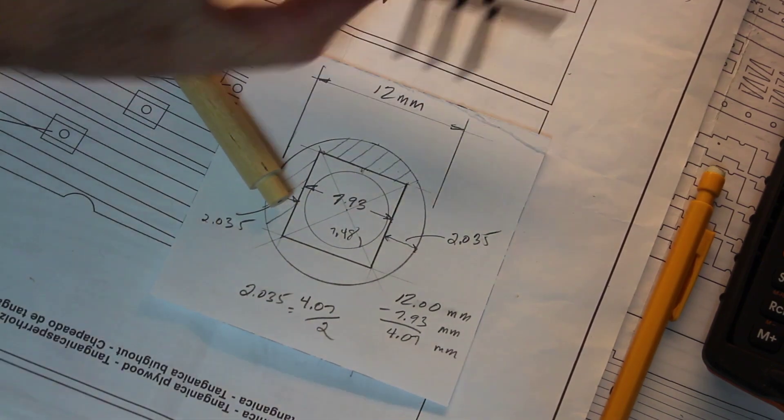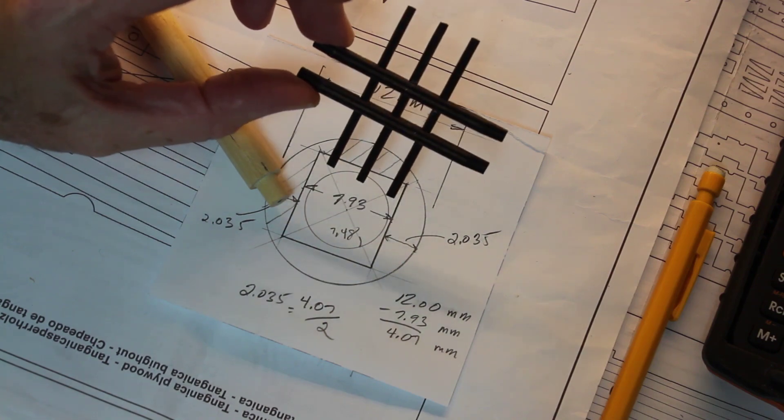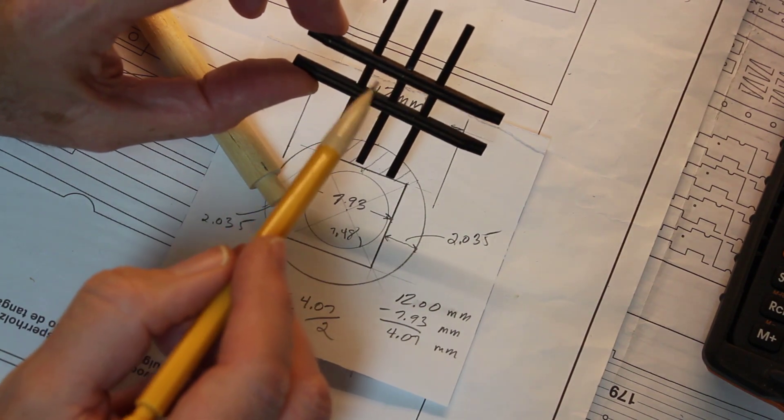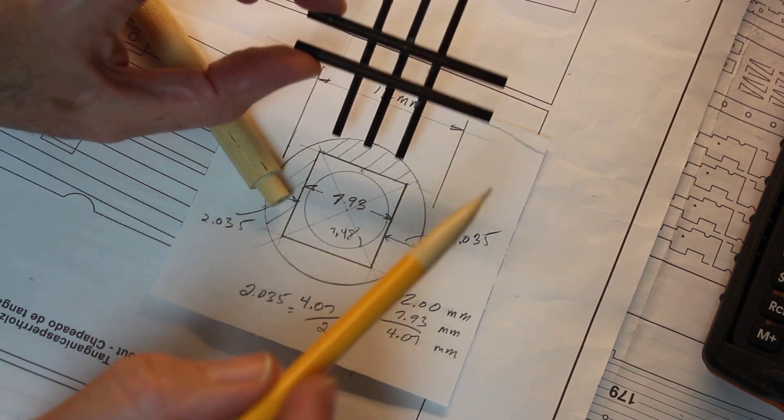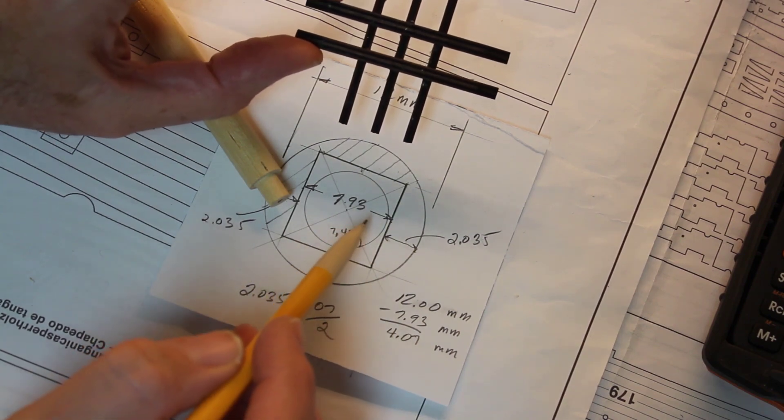As you can see, I already have the tree made and I already know the dimensions. It's going to be 7.93 millimeters.